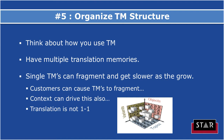For example, we have multiple translation memories for each customer that we work with. The danger of having one big, massive translation memory is that it can fragment, losing its value, and it also gets slower as you grow and add more text. When you're doing lots and lots of translation, context is also very, very important.